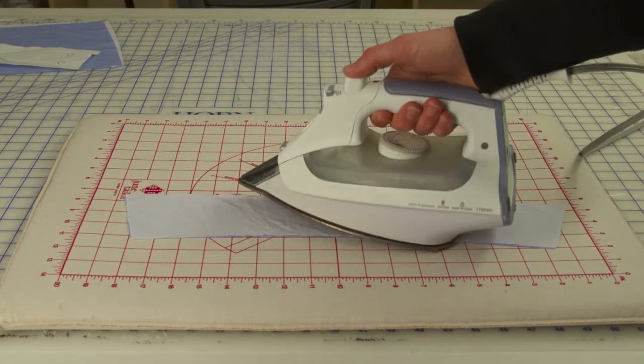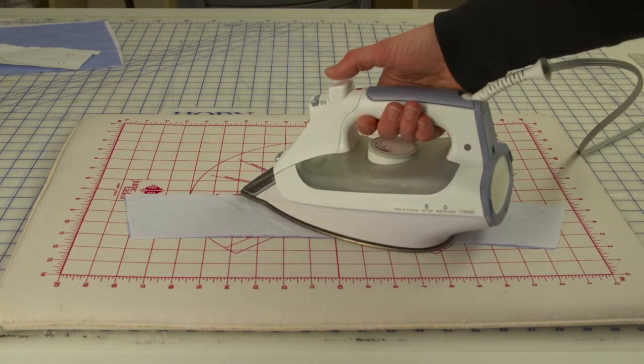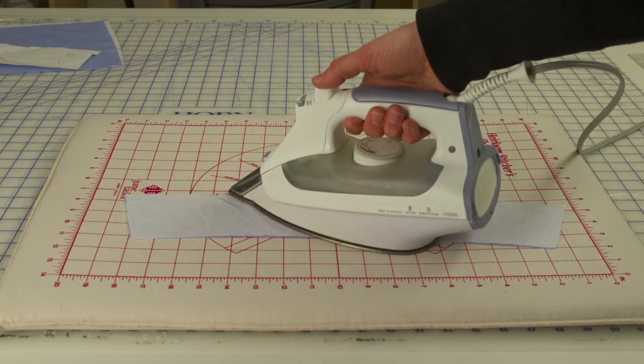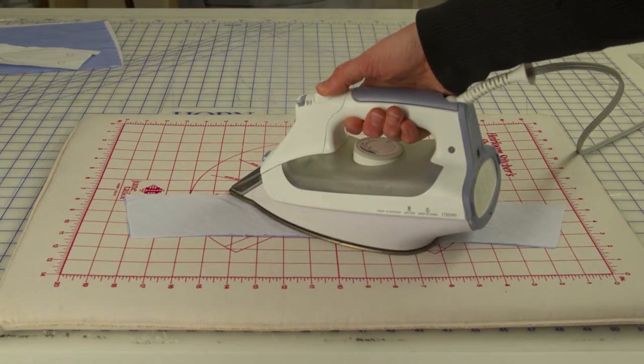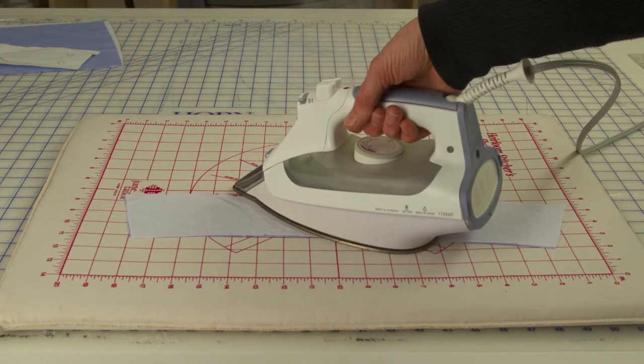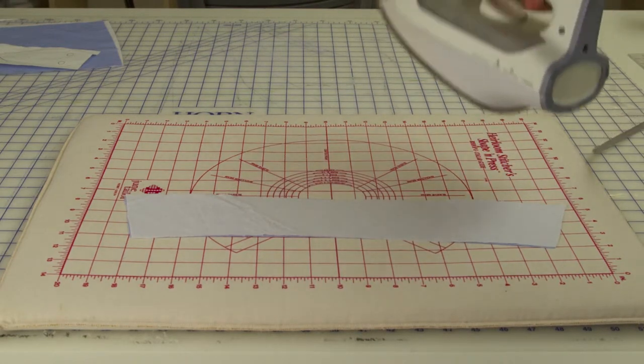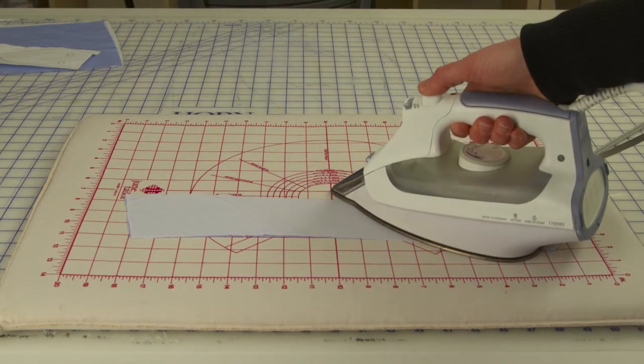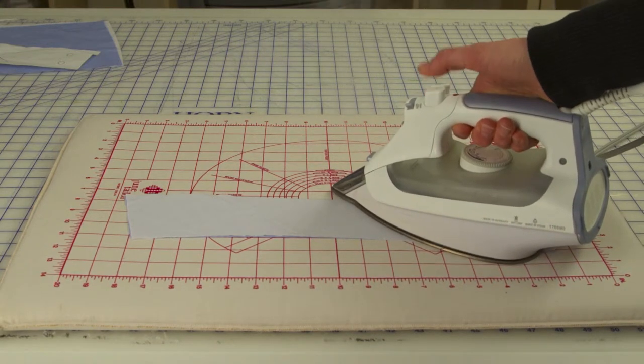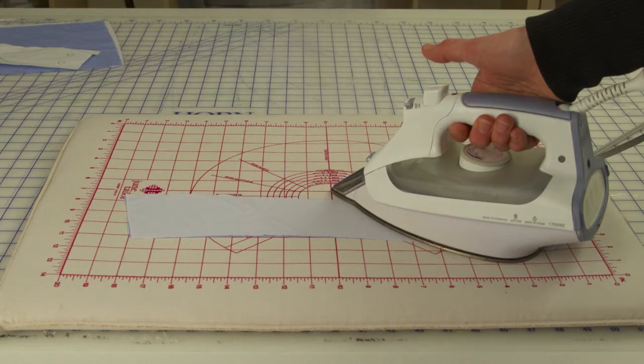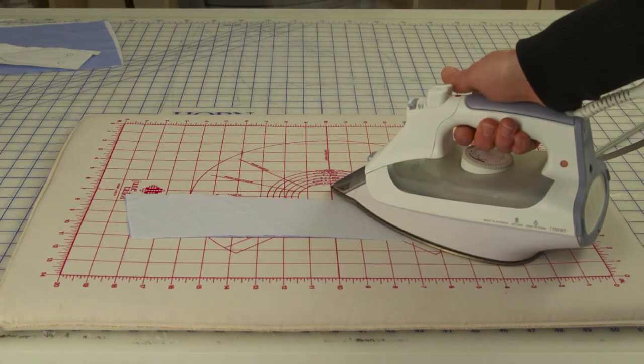But basically what you're going to do is you're going to start, I like to start in the middle, and I'm just going to place my iron on to the interfacing and I'm just going to give it some gentle steam. I'm just going to hold it down for about 10 seconds and then I'm going to lift it up and I'm going to move it over to one side. I'm going to repeat, steam, I'm going to press it about 10 seconds.